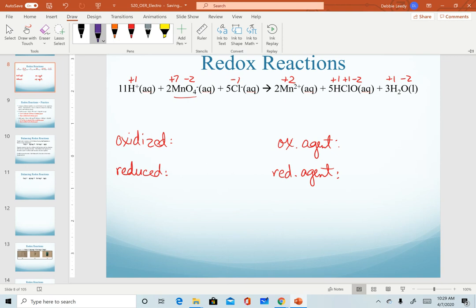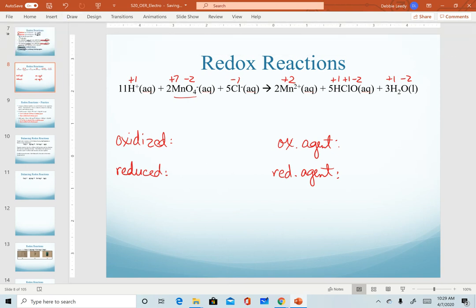Now we can look at what's happening to substances as this reaction proceeds. Notice the two that changed oxidation number are manganese, and chlorine as the other element that changes.